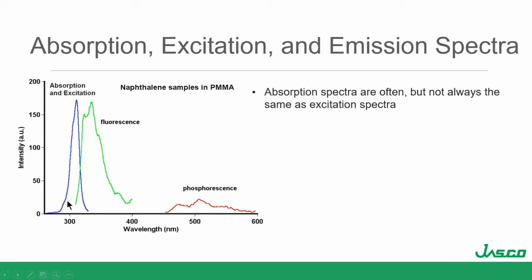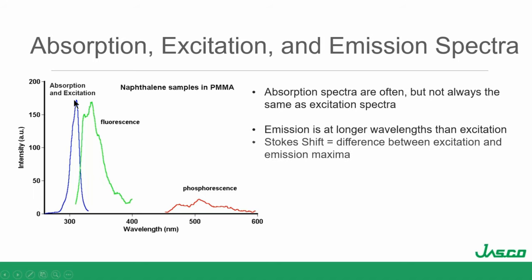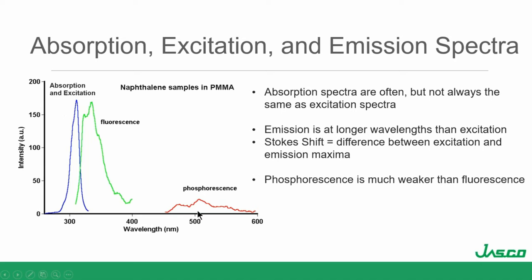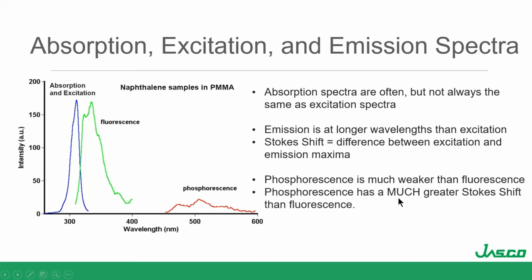Usually absorption and excitation are going to look very similar. The next thing you should observe is that emission — whether it's fluorescence or phosphorescence — is at longer wavelengths than the excitation. This is called the Stokes shift. The difference between the lambda max for excitation and lambda max for emission is the Stokes shift. In the case of phosphorescence, which is a much weaker signal with much lower quantum efficiency, the Stokes shift is much greater — that's an advantage of phosphorescence in terms of getting rid of scattered excitation light.